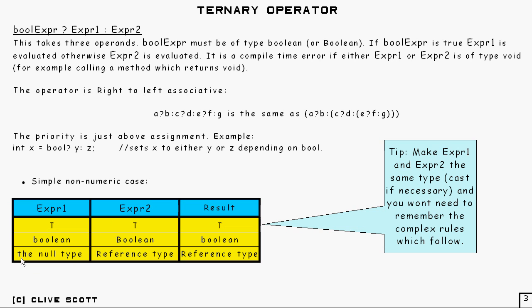Now, if we've got the null type, and there's only one way to get that, basically, and that's to write null in as a literal. And the reference type, then the result is the reference type there.